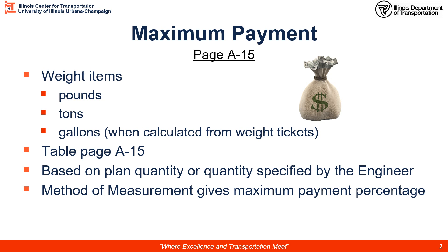Maximum payment is based on weight items, either paid by the pound, ton, or gallon when calculated from weight tickets. You can follow along on page A15 in the Doc Guide. Maximum payment is an incentive for the contractor to bring us 100% of the theoretical quantity that we believe we need. It accounts for differences in density of compacted materials and irregular surfaces in order to fill a volume with a certain amount of tonnage or pounds. It is based on the plan quantity or the quantity specified by the engineer.